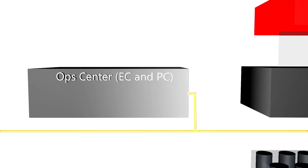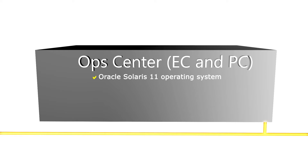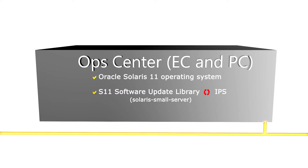The enterprise controller must be running Oracle Solaris 11 and have its Oracle Solaris 11 software update library synchronizing with an Oracle Solaris 11 image packaging system. When you create a non-global zone, Ops Center installs it from the Oracle Solaris 11 software update library using the default software group named Solaris Small Server. This group uses less space than when you install from an operating system image.